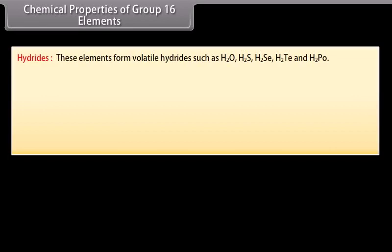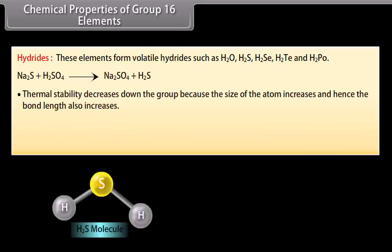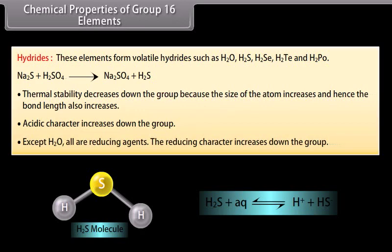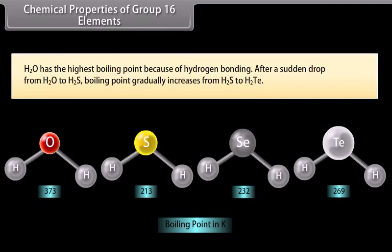Hydrides: These elements form volatile hydrides such as H2O, H2S, H2Se, H2Te and H2Po. Thermal stability decreases down the group because the size of the atom increases and hence the bond length also increases. Acidic character increases down the group because they can dissociate more easily to give H+ ions. Except H2O, all are reducing agents. The reducing character increases down the group. H2O has the highest boiling point because of hydrogen bonding. After a sudden drop from H2O to H2S, the boiling point gradually increases from H2S to H2Te because of increase of molecular mass and hence van der Waals forces.